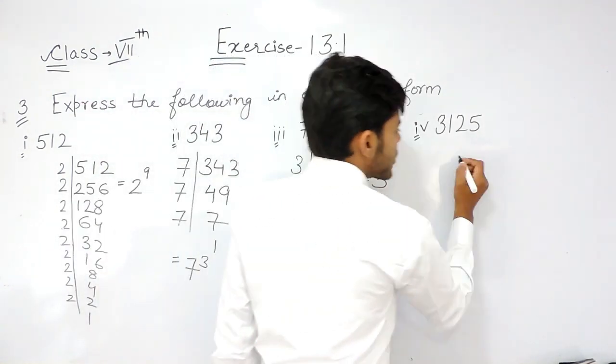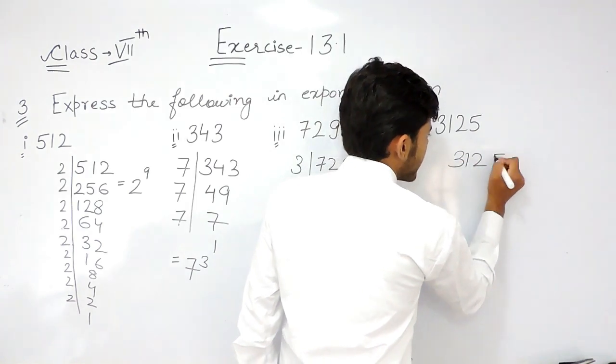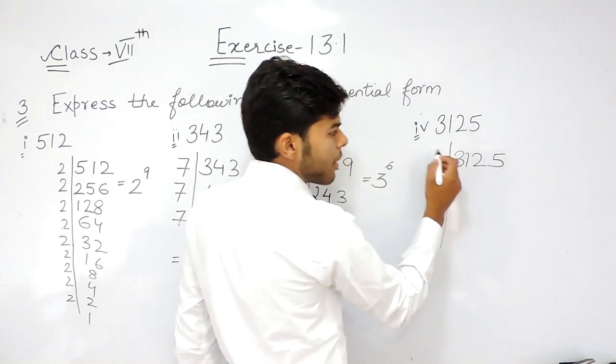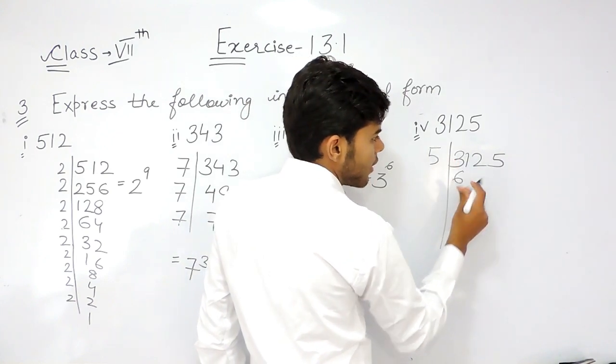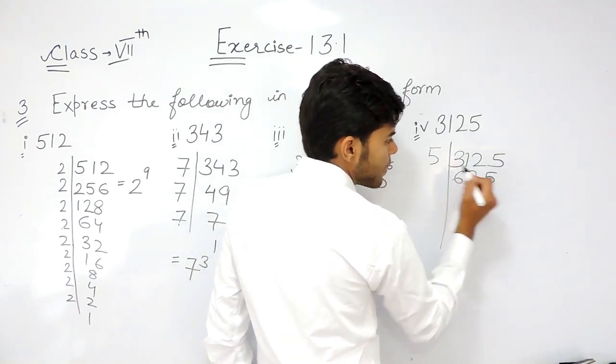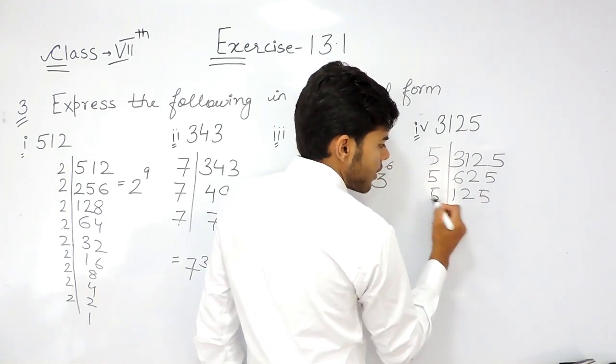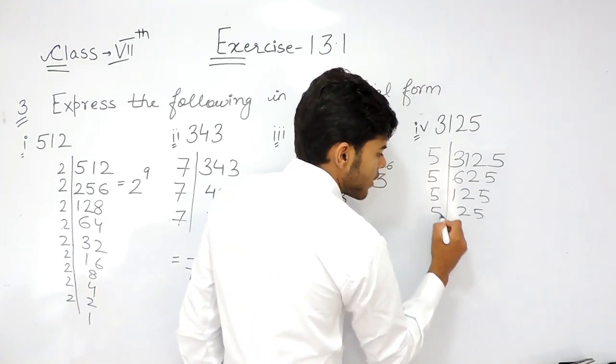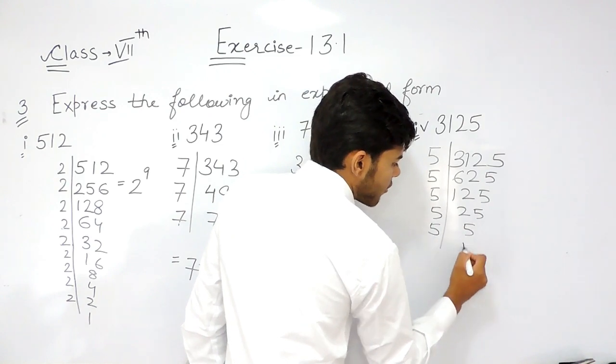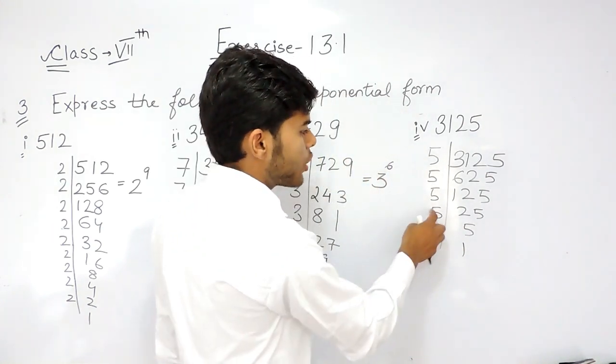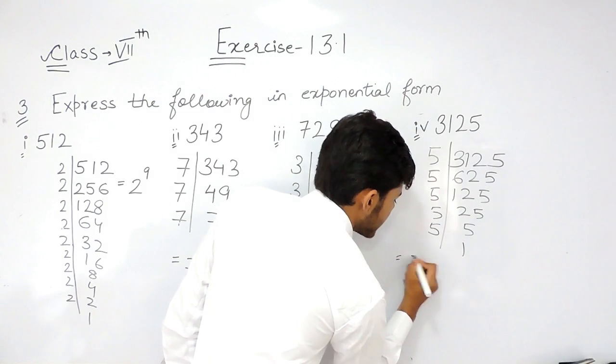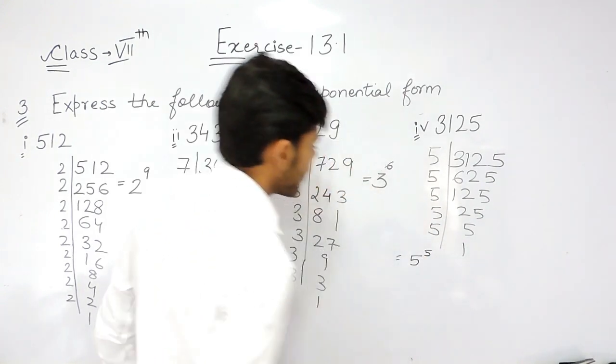In the last part, 3125, the unit digit is 5, so it can be divided by 5. 5 times 625, 5 times 125, 5 times 25, 5 times 5, and 5 times 1. So, 5 raised to the power of 1, 2, 3, 4, and 5. That means 5 raised to the power of 5.